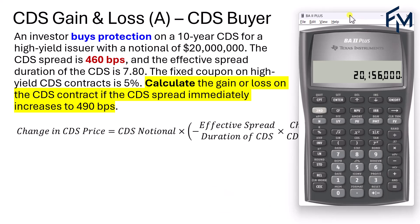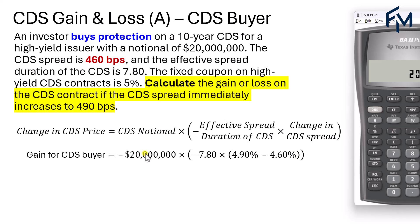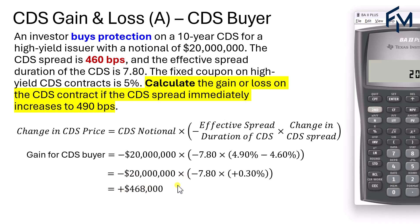Alternatively, we can use the formula: CDS notional times negative effective spread duration times the change in CDS spread. To calculate the gain or loss directly for the CDS buyer, we use negative $20,000,000 for the notional — since the investor is buying protection and taking a short position. With spread duration 7.8 and change in CDS spread of positive 0.3%, a negative times a negative gives a positive result of $468,000.